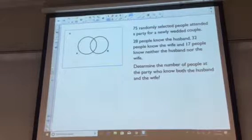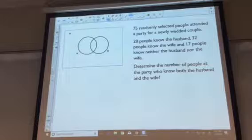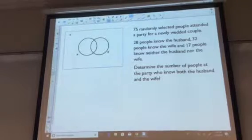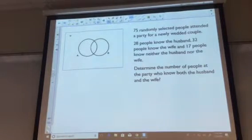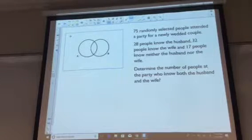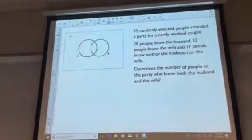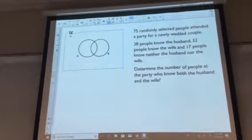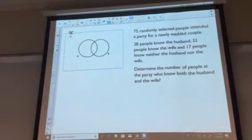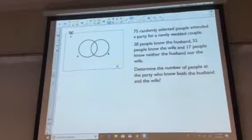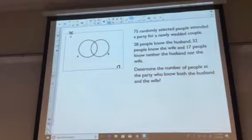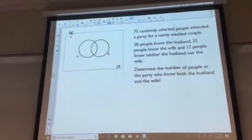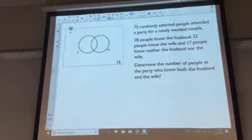The other problem is finding the number of people that know both the husband and the wife. That's what we would like to have to begin with. But if we don't have what's shared by the two circles, the second most useful piece of information is what's outside of the circles. Of those 75 people in that room, I know that 17 of them are down here in this corner because they don't know anybody. So they're the outsiders. You've probably been to a party like that before.